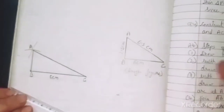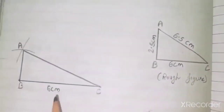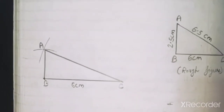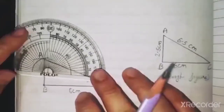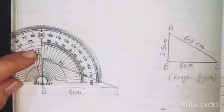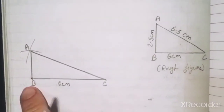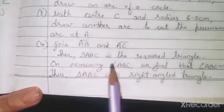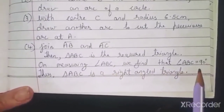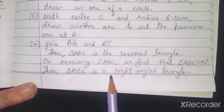It is also asked to measure angle B. Looking at the figure, it appears to be a right angle. Placing a protractor on B confirms it is exactly 90 degrees. Therefore, on measuring angle ABC, we find angle ABC = 90 degrees, and thus triangle ABC is a right-angle triangle.